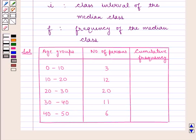Now we shall calculate cumulative frequency, in which the first entry will be the same as the frequency. Next will be 3 plus 12, that is 15. Then 15 plus 20, that is 35. 35 plus 11, that is 46. And 46 plus 6, that is 52.